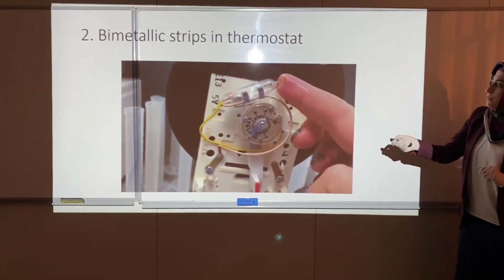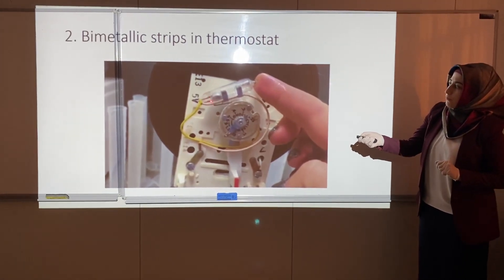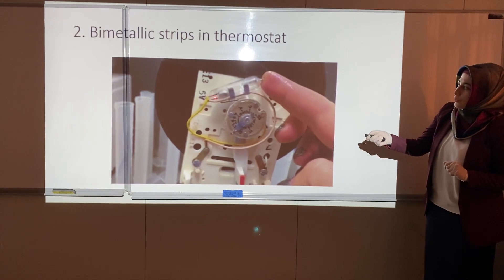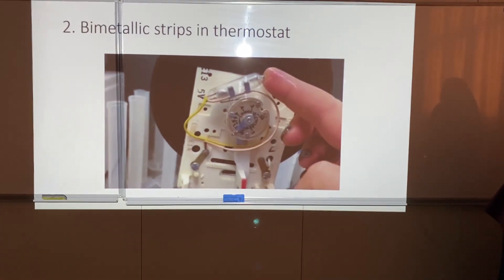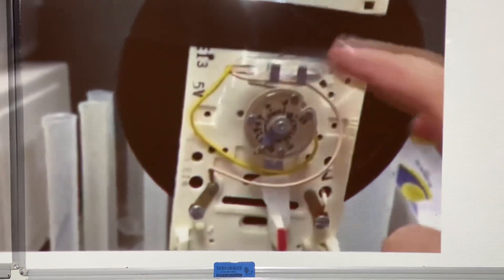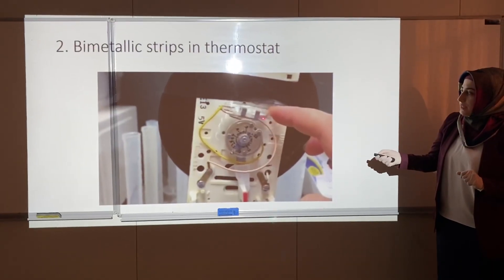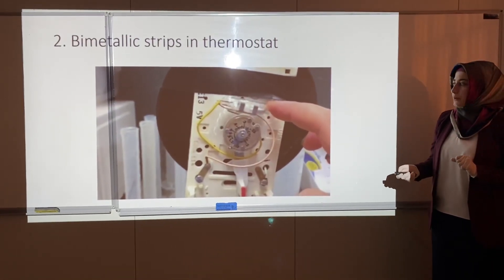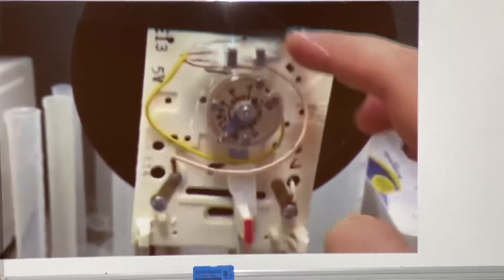When the mercury is in that position, it connects the two wires at the end. If the mercury is in this position, it closes the circuit and the heater is on. When the mercury is over here, it doesn't connect, so the circuit is open and the heater is off.